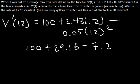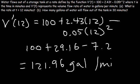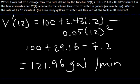So if we add these values, the rate at 12 minutes is going to be 121.96 gallons per minute. So that's all you have to do for part A. Now what about part B?